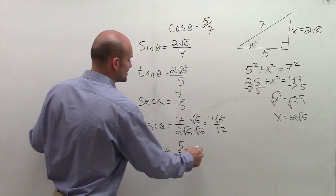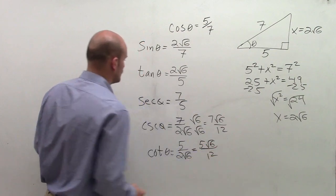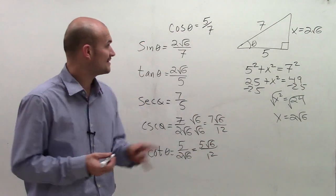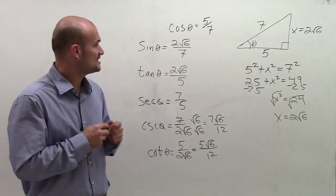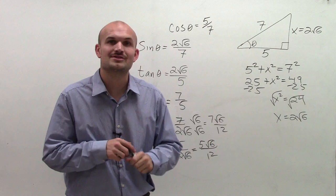Again, rationalize the denominator, and you get 5 radical 6 over 12. So there you go, ladies and gentlemen. That's how you find the six trigonometric functions when given one trigonometric function and creating a right triangle. Thanks.